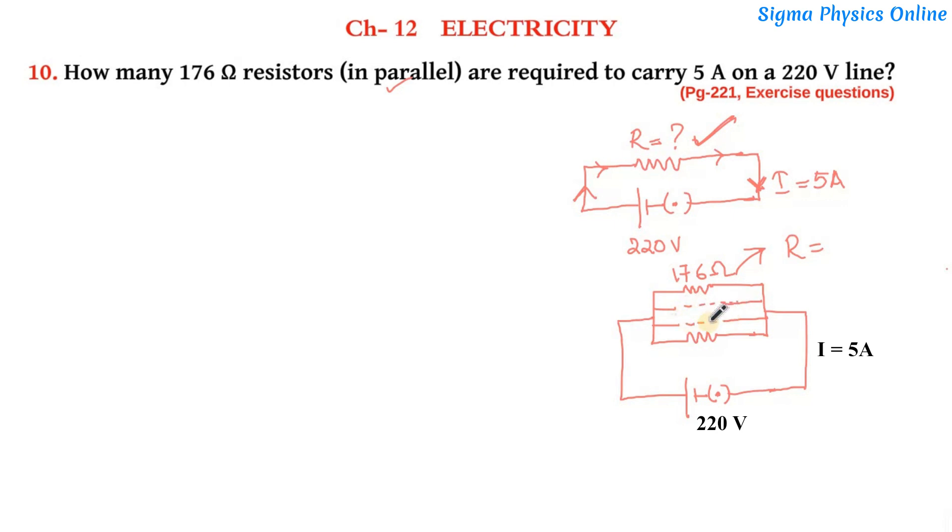So there are a certain number of resistances, each having value 176 ohms, connected in parallel, and they all together produce a resistance which is equivalent to this resistance. Now we have to find out how many of these resistors are connected in parallel.